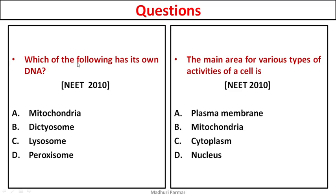Which organelle has its own DNA? Mitochondria, dictyosome, lysosome, or peroxisome? The answer is mitochondria. Only mitochondria and chloroplasts have their own DNA and also have their own ribosomes.